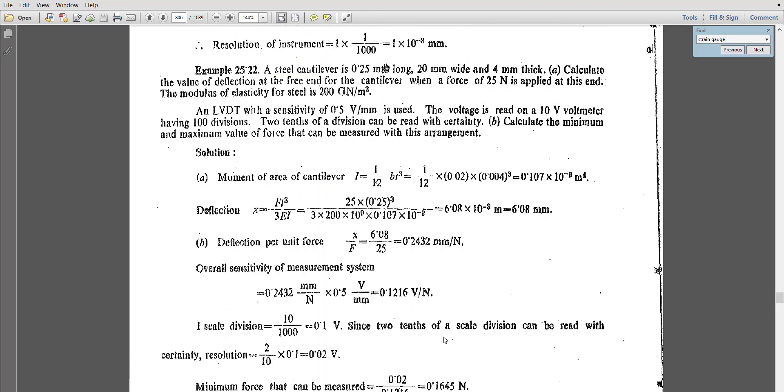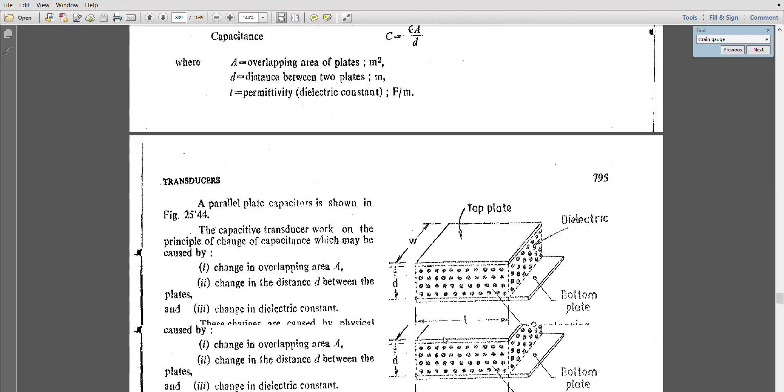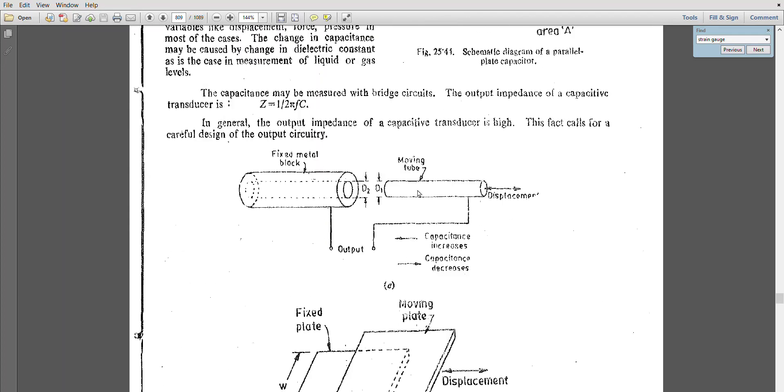This is one set of famous problems. The another set of problems we will see in the capacitive transducer. As I told you, capacitive transducer - this is C equal to epsilon A by D.